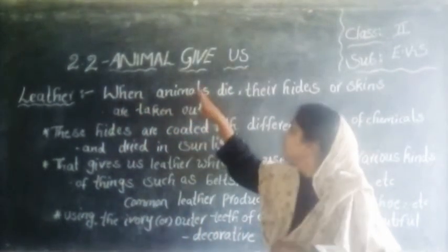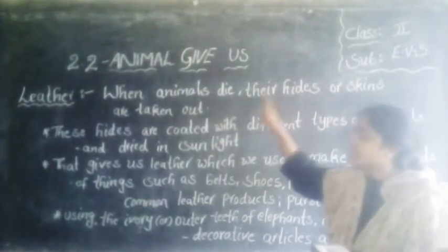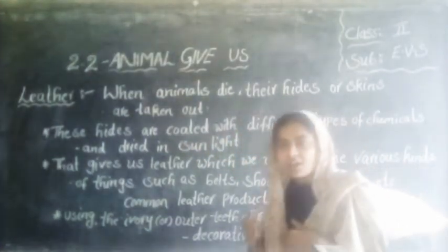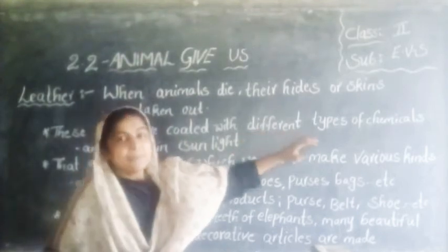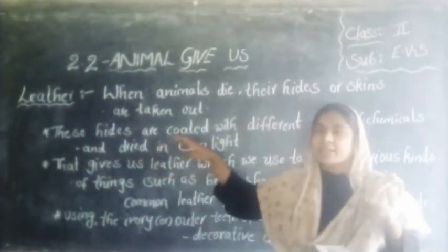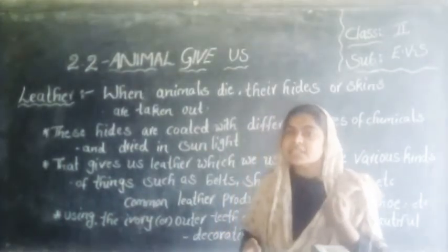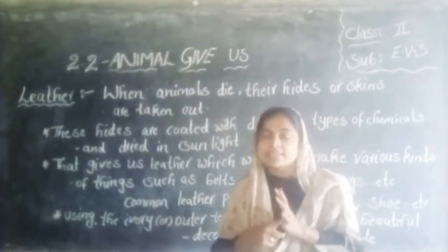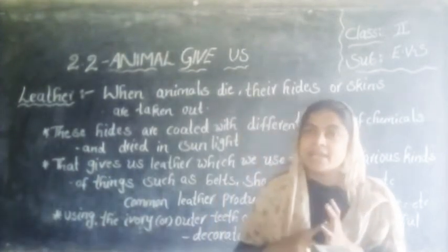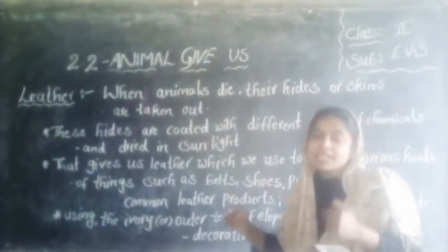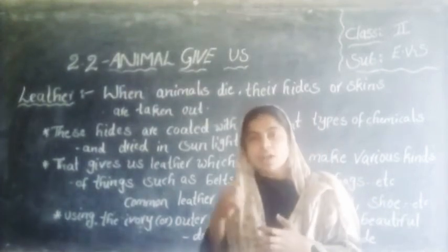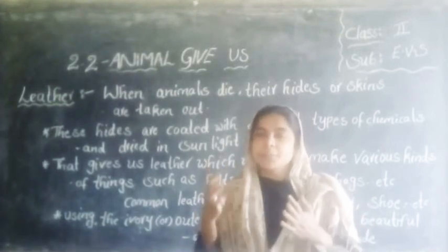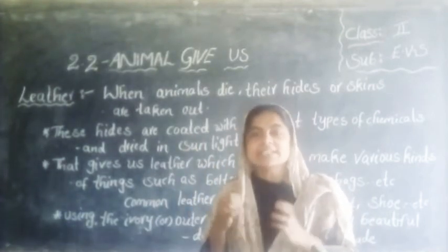When animals die, their hides or skins are taken out. These hides are coated with different kinds of chemicals and dried in sunlight. That gives us leather, which we use to make different kinds of things, such as shoes and purses. Using the ivory, or outer teeth of elephants, different beautiful decorative articles are made.